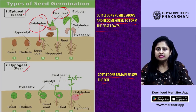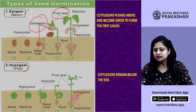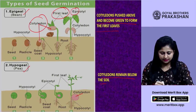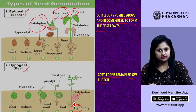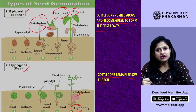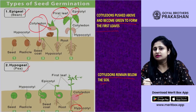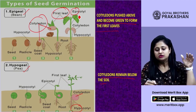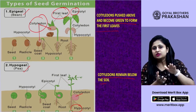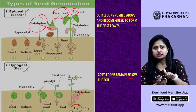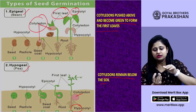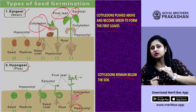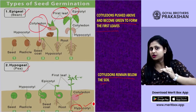Two important terms: epicotyl and hypocotyl. These are both parts of the cotyledon. The epicotyl is the upper part of the cotyledon and the hypocotyl is the lowermost part of the cotyledon.